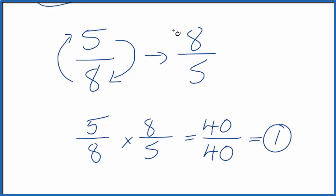The reciprocal for 5 eighths is 8 fifths. We could also write this as a mixed fraction. 5 goes into 8 one time with 3 left over. So 8 fifths equals the mixed fraction 1 and 3 fifths.